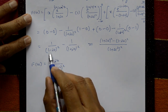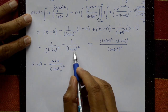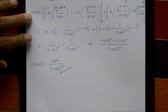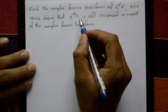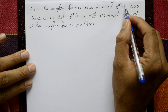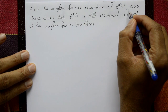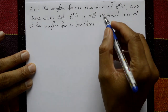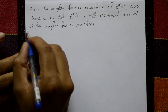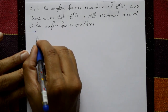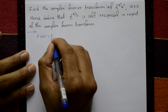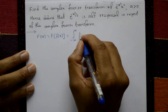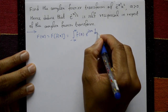Note that (1-iu)² gives 1+u² in the denominator, confirming this is the required answer. Now the second problem: find the complex Fourier transform of e^(-a²x²) where a > 0, and hence deduce that e^(-x²/2) is self-reciprocal with respect to the complex Fourier transform. Solution: F(u) = integral from minus infinity to plus infinity of f(x)·e^(iux) dx.